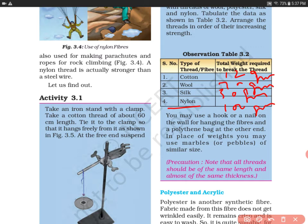In this activity, we came to know which fiber is the strongest. Cotton fiber is the weakest, whereas nylon fiber is the strongest. I hope you liked this session. Thank you so much for watching.